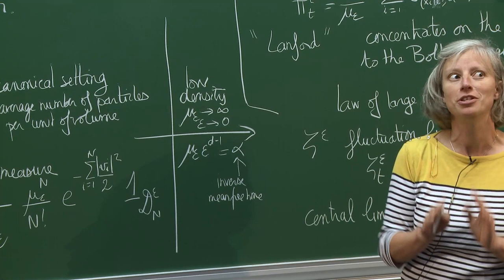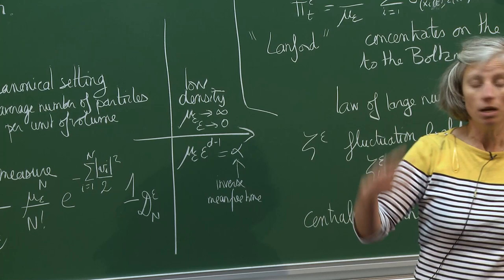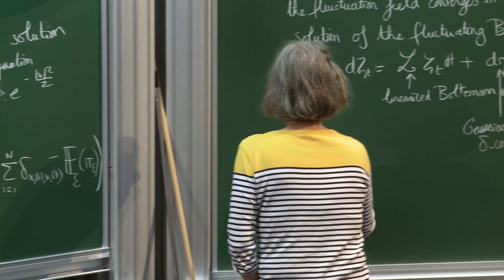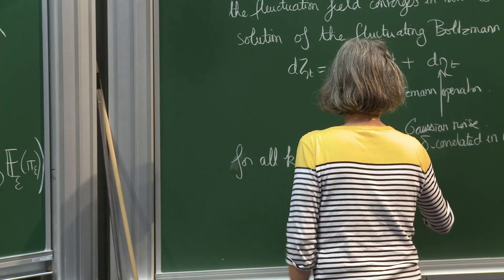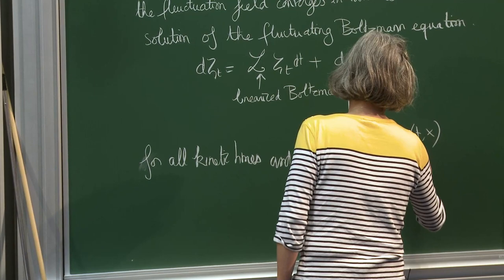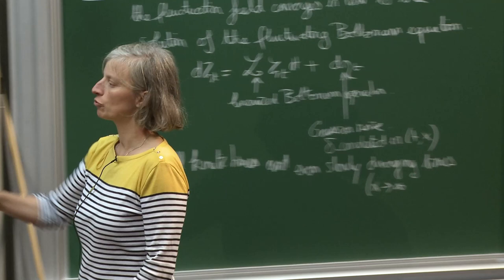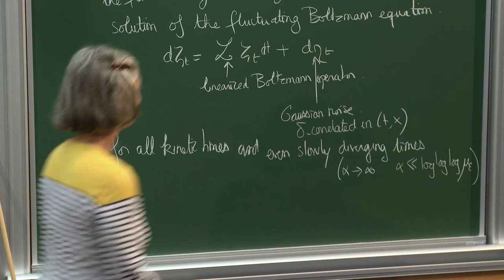This convergence holds for all kinetic times, even slowly diverging times. The parameter α here measures the typical number of collisions per particle. Kinetic time is when this parameter is one. α can go to infinity as slowly as something like log log log μ_ε.